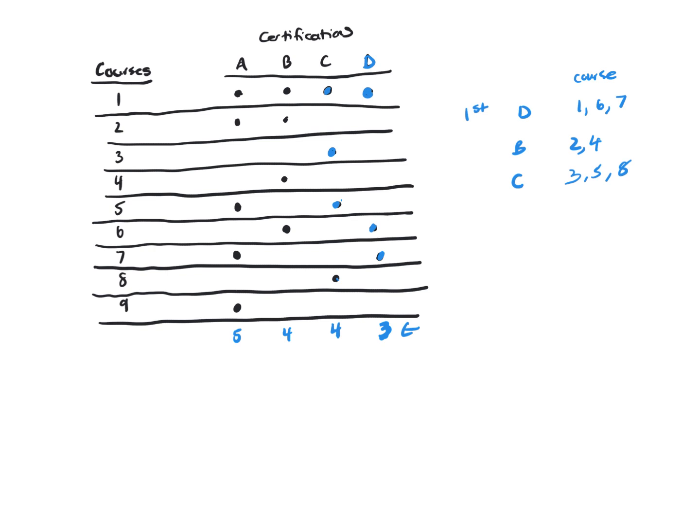Okay, so your second certification is going to be B because it takes less work. Okay. All right, for C, she still lacks three, five, and eight. And then, let me see.